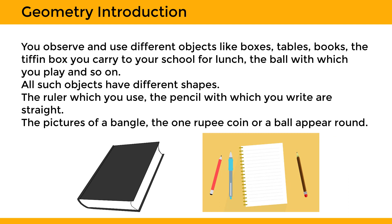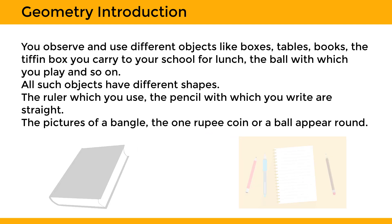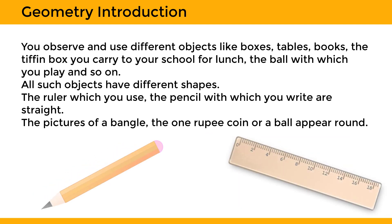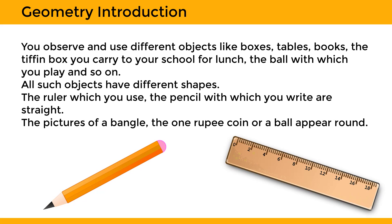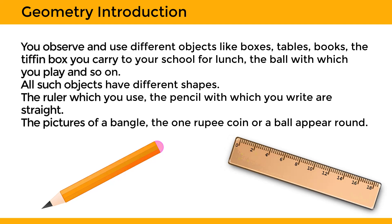We observe and use different objects like boxes, tables, books, the lunch box you carry to school, and the ball with which you play. All such objects have different shapes — the ruler you use, the pencil with which you write, a bangle, a coin, or a ball all appear round.